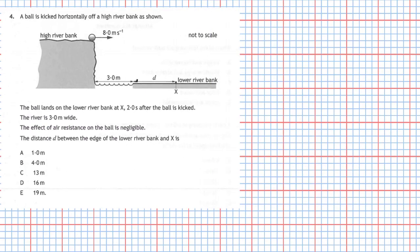Question 4 from section 1 of the 2019 National 5 Physics examination. A ball is kicked horizontally off a high riverbank as shown. The diagram is not to scale. The ball lands on the lower riverbank at X, two seconds after the ball is kicked. The river is 3.0 meters wide and the effect of air resistance on the ball is negligible. We have to find the distance d between the edge of the lower riverbank and X.